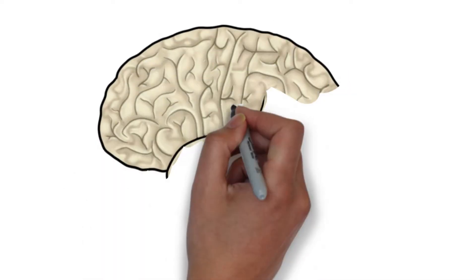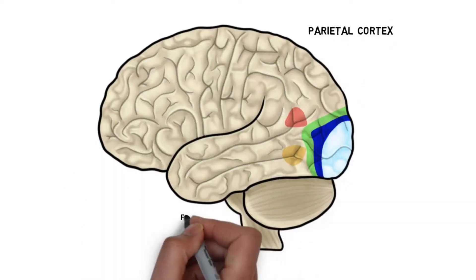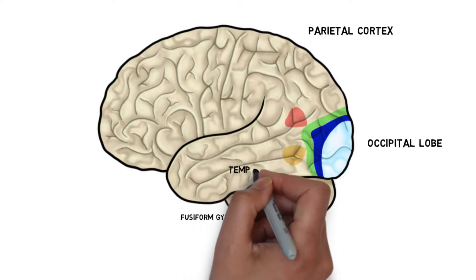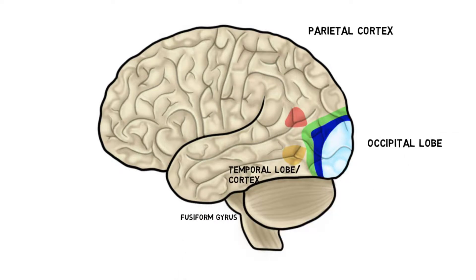Areas beyond the striate cortex are located mainly in the occipital and temporal lobes of the brain and have been identified because they are areas that are sensitive to visual information.